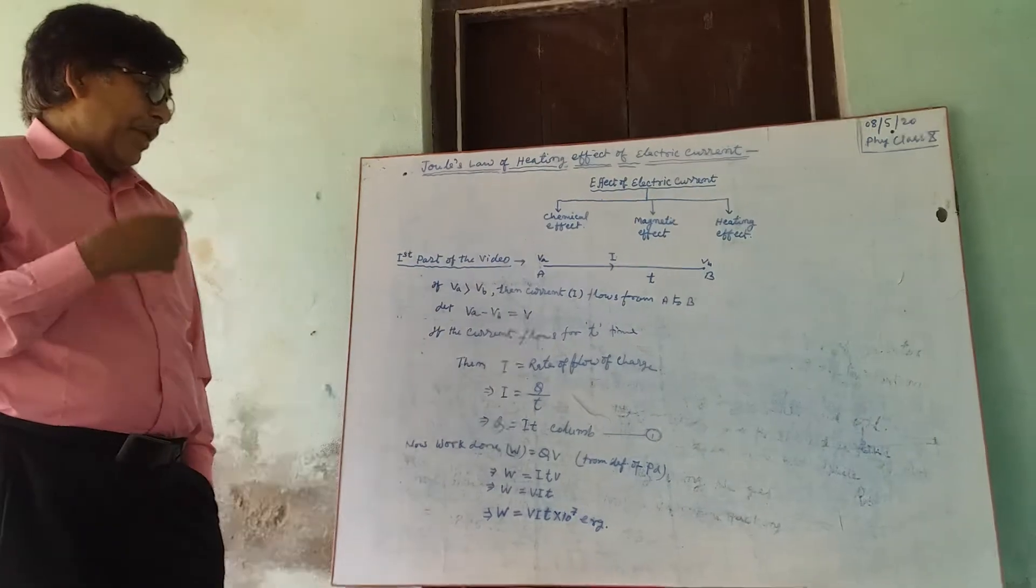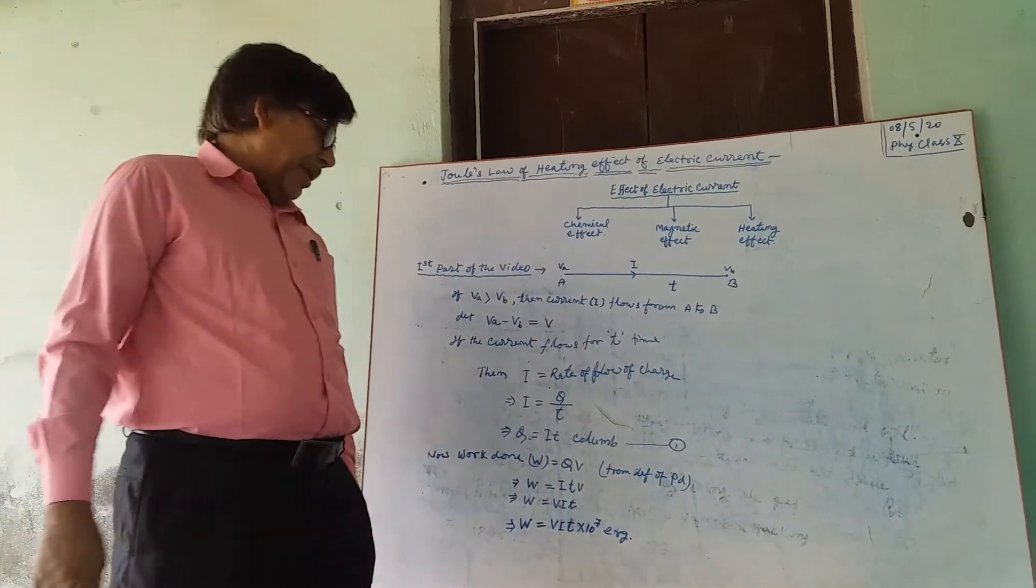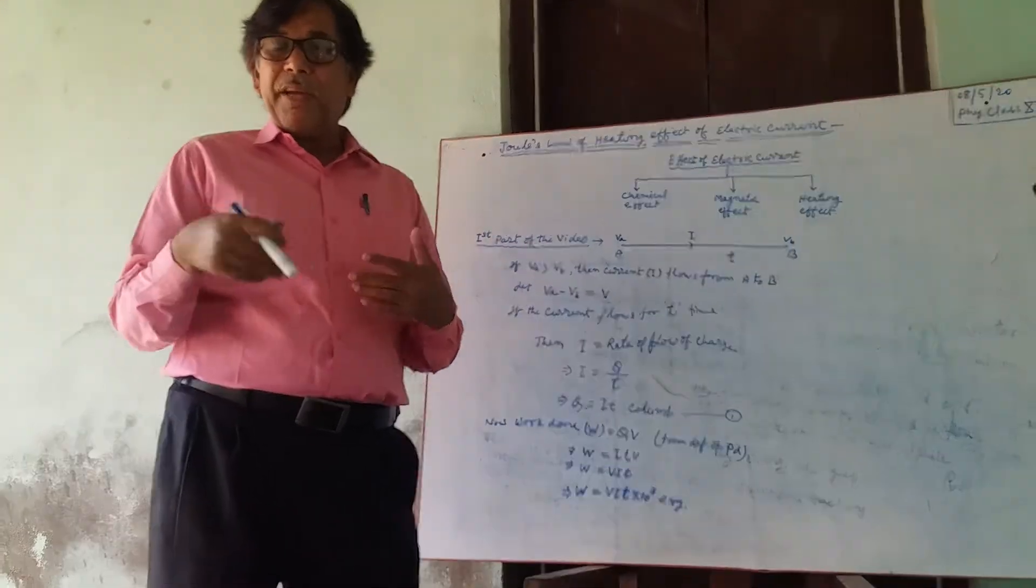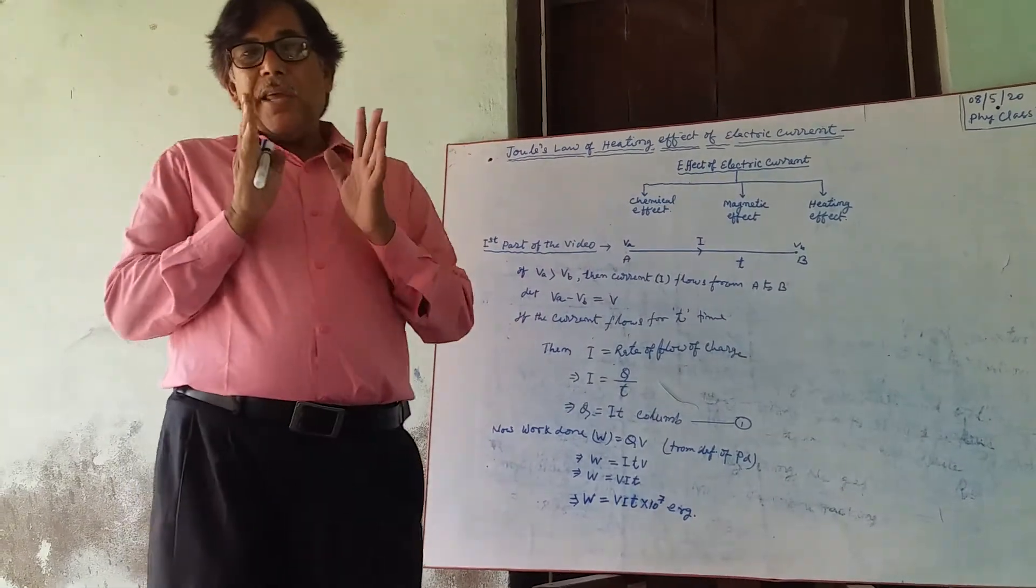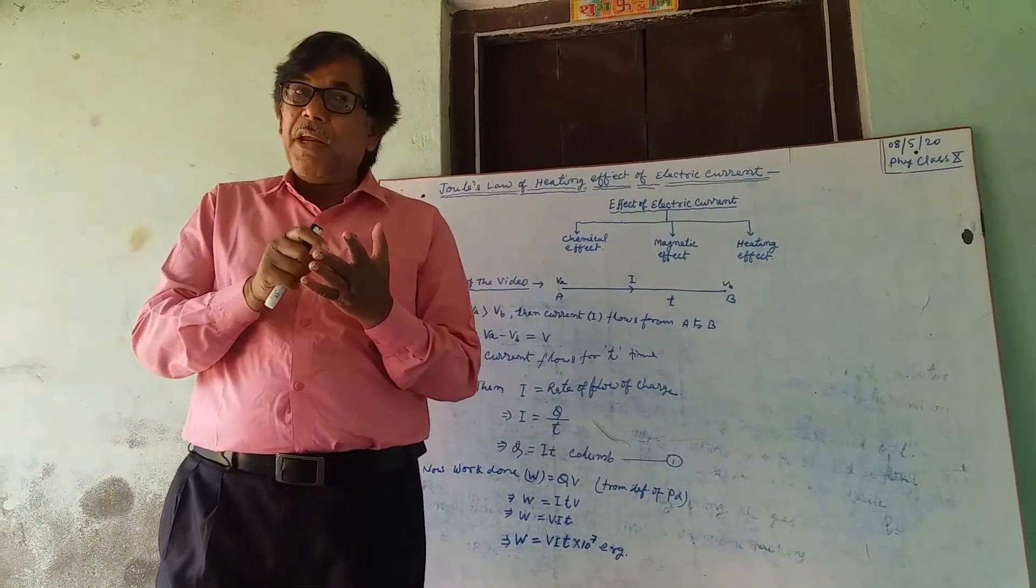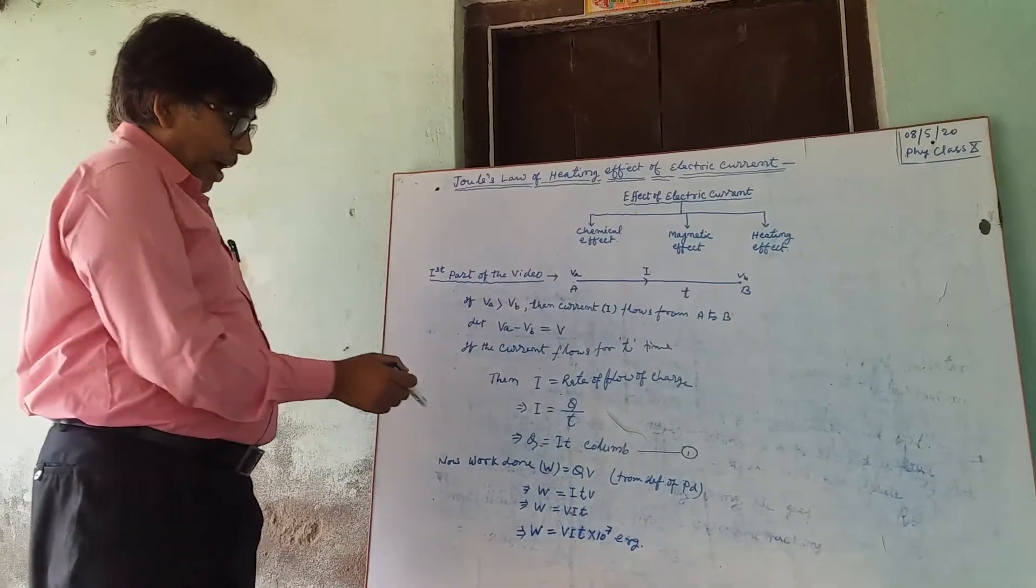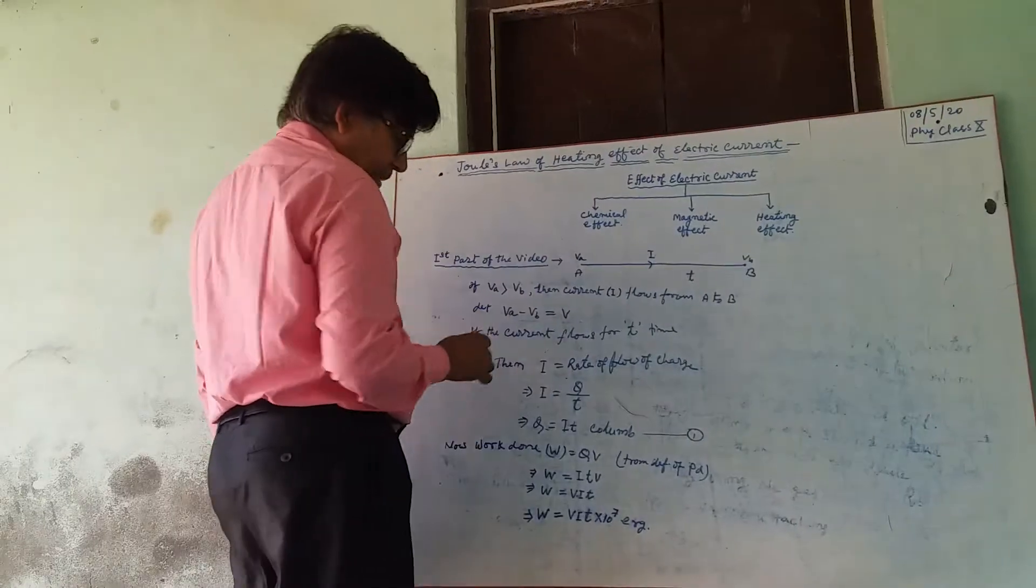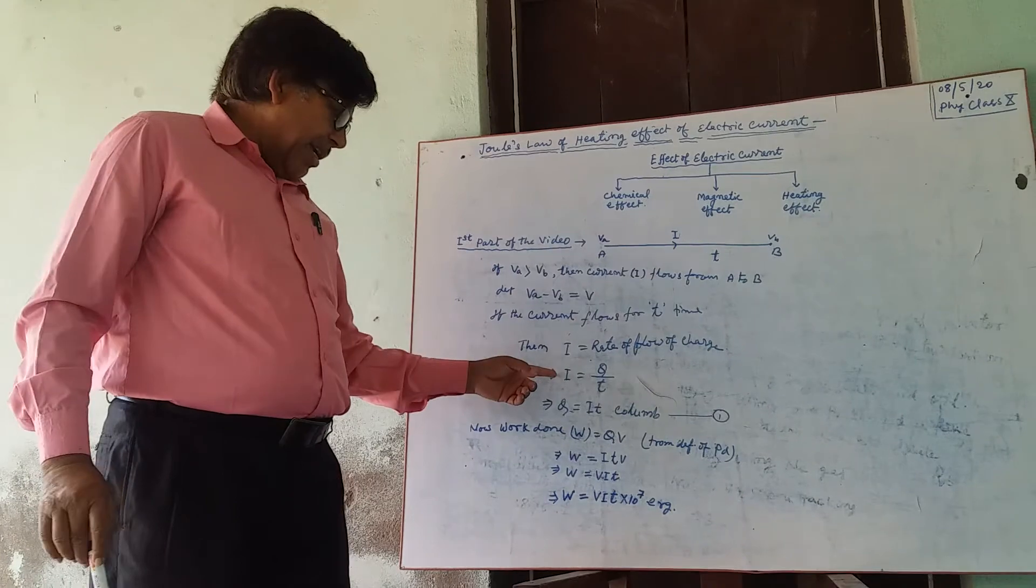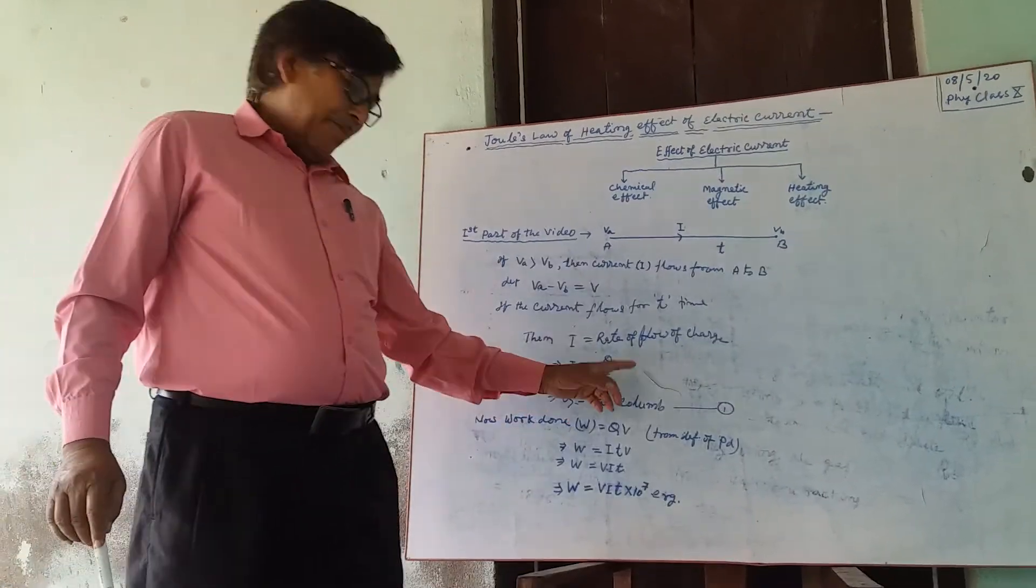Current I flows through the conductor for time T. I equals rate of flow of charge. Therefore, I equals Q by T, or Q equals IT coulomb.